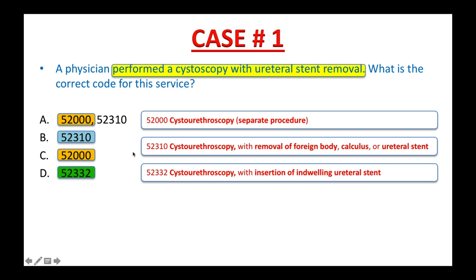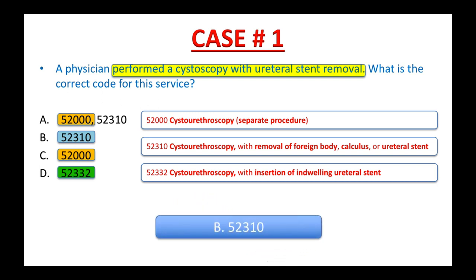A physician performed a cystoscopy with ureteral stent removal. If you pick CPT 52310 — cystourethroscopy with removal of foreign body, calculus, or ureteral stent — congratulations! This is the right code for this procedure. CPT 52000 should not be reported separately. You can only use this code when it is the only procedure performed; otherwise, it is bundled into the main procedure with the removal of the stent endoscopically. The correct answer is B, 52310.